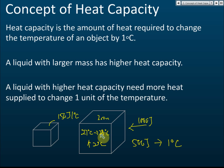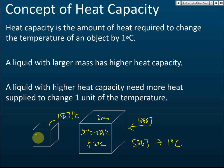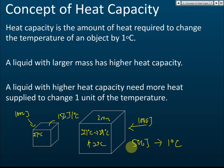If the mass is higher, the heat capacity will be higher. An object with higher heat capacity needs more heat supply to change one unit of temperature. Let's say both blocks start at 27 degrees Celsius, and you give each one 1000 joules. The larger block has a heat capacity of 500 joules per degree Celsius, so giving it 1000 joules will increase its temperature by 2 degrees Celsius.